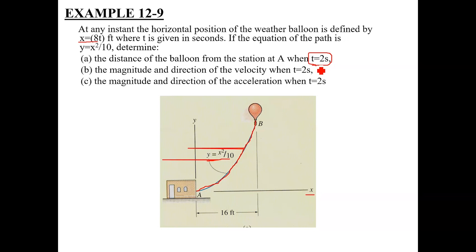We remember this method from mathematics. The method is called chain rule. Suppose you have y as a function of x and you want to find dy/dt, then it is dy/dx times dx/dt. You will cancel dx, and at the final step you will have dy/dt. Because y is a function of x, you differentiate y with respect to x, and then x differentiates with respect to time. This way you can use chain rule.